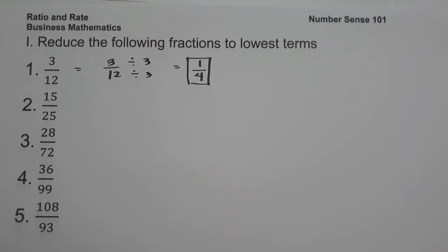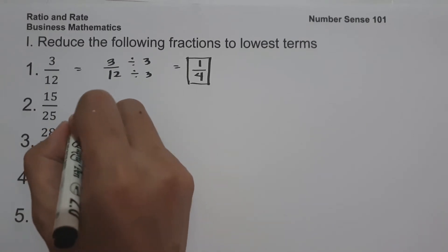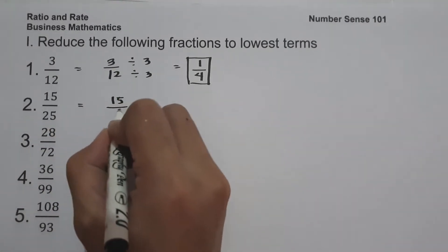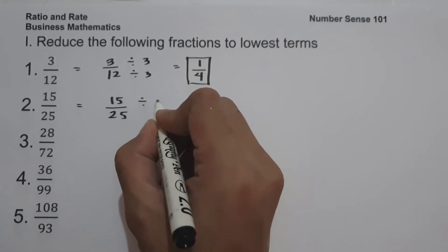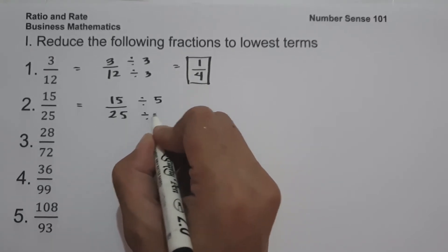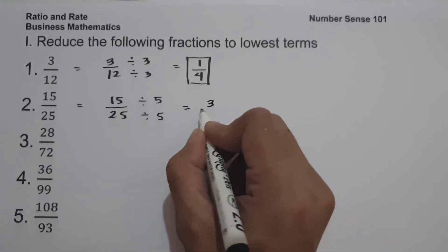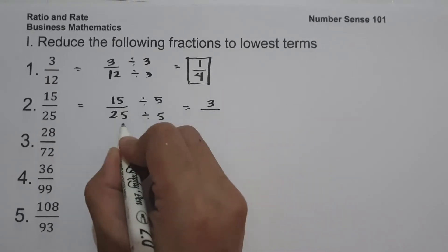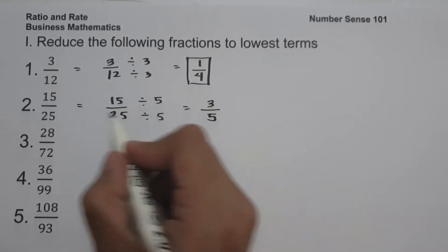On number two, we have 15 over 25. The greatest common factor between 15 and 25 is 5. Let us divide the numerator and the denominator by 5. 15 divided by 5 is 3, and 25 divided by 5 is 5. Therefore 15 over 25 equals 3 over 5.